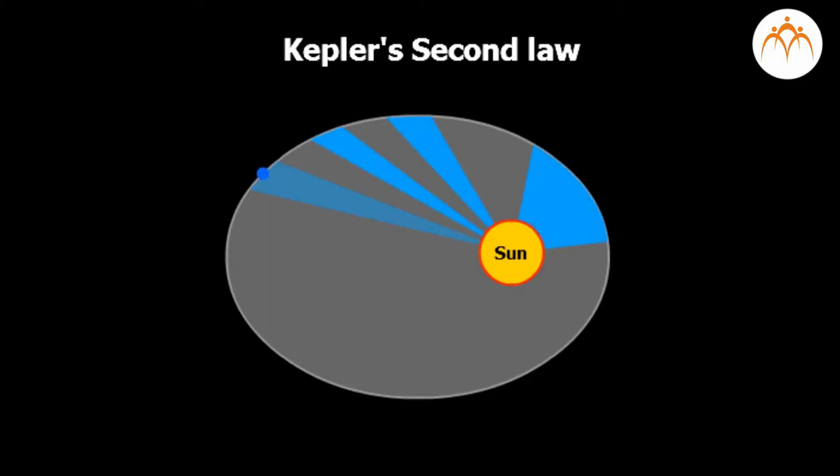In the second law, it has been said that the area travelled in its orbit by each planet is constant at any given time. Area swept per unit time is constant. We can see it here.